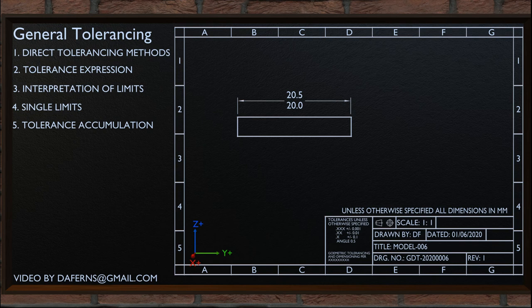In this video, I am going to discuss practices for expressing tolerances on linear and angular dimensions, and interpretations governing limits and tolerances. The applicability of material condition modifiers on geometric tolerance values will be covered in the following videos.